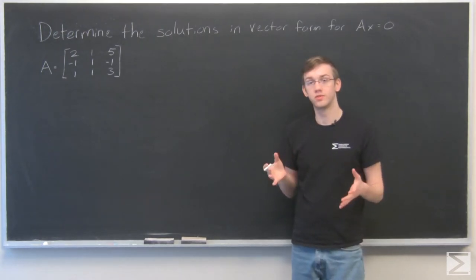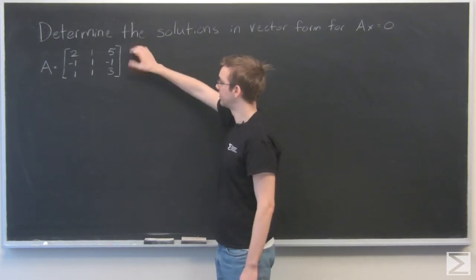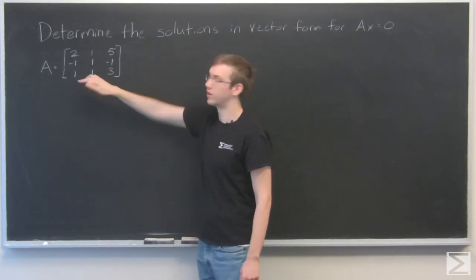So we need to start by putting this matrix into reduced row echelon form. I'm going to start by switching these two rows so I get that 1 in the top left-hand corner.